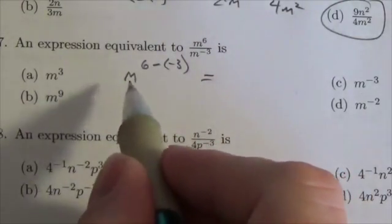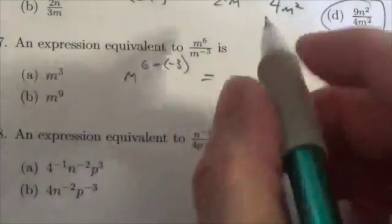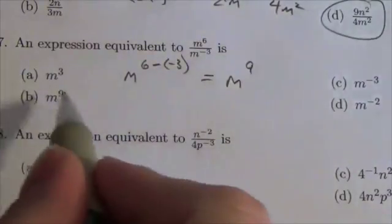I suspect a lot of people are going to go, that's going to be just m to the three, because you're going to subtract three, but you're subtracting a positive three. To subtract the negative, you have to add, this becomes m to the nine.